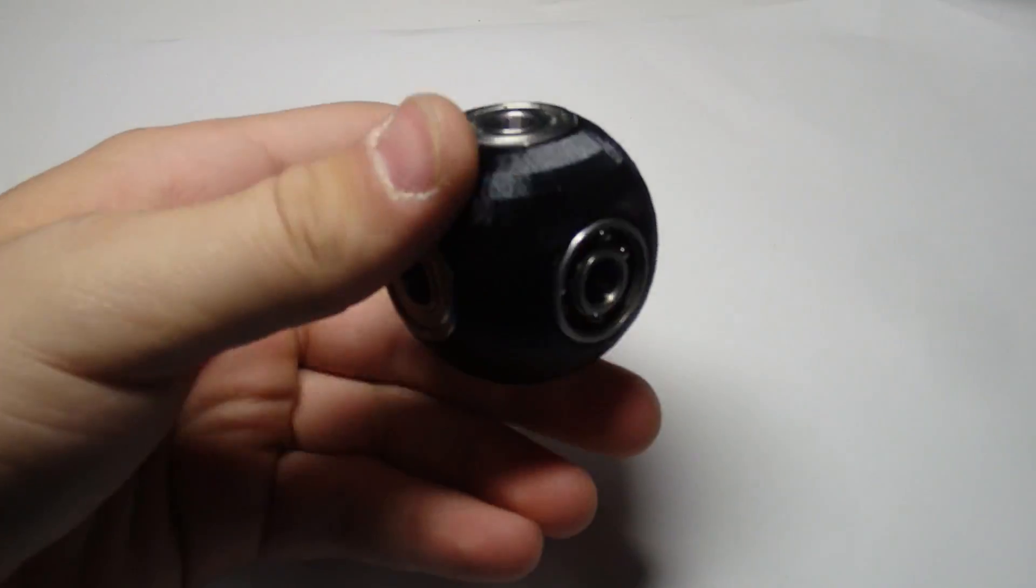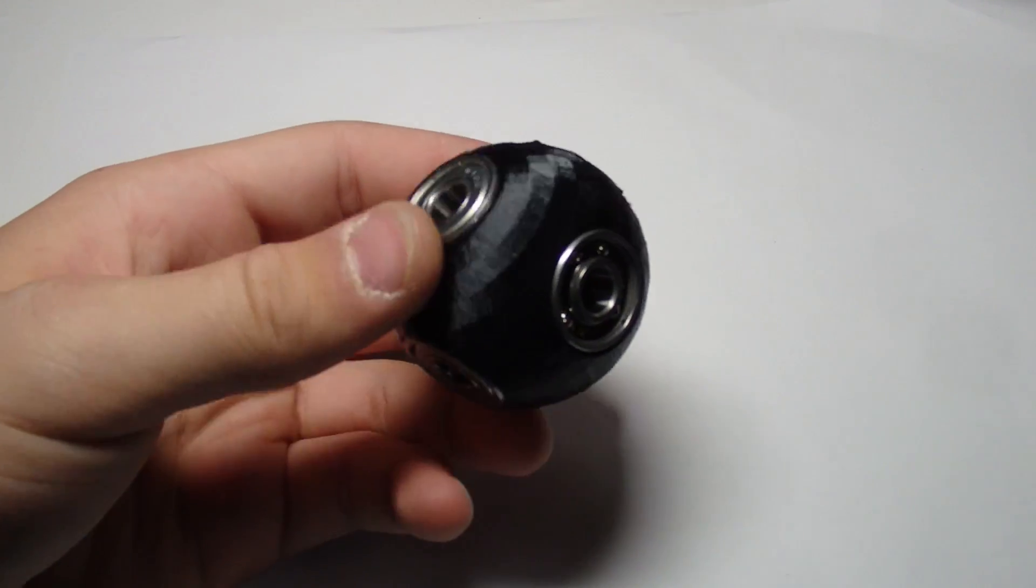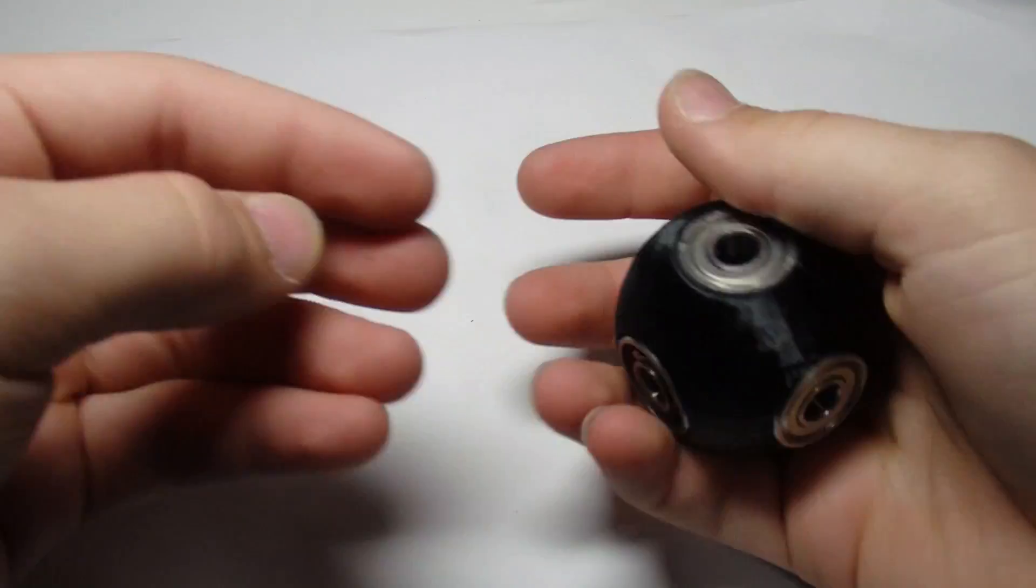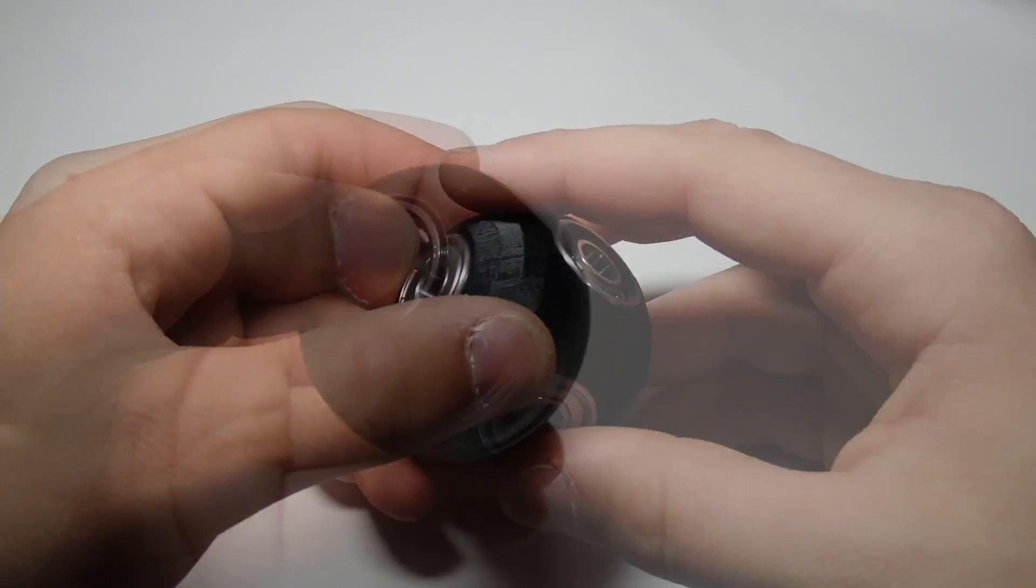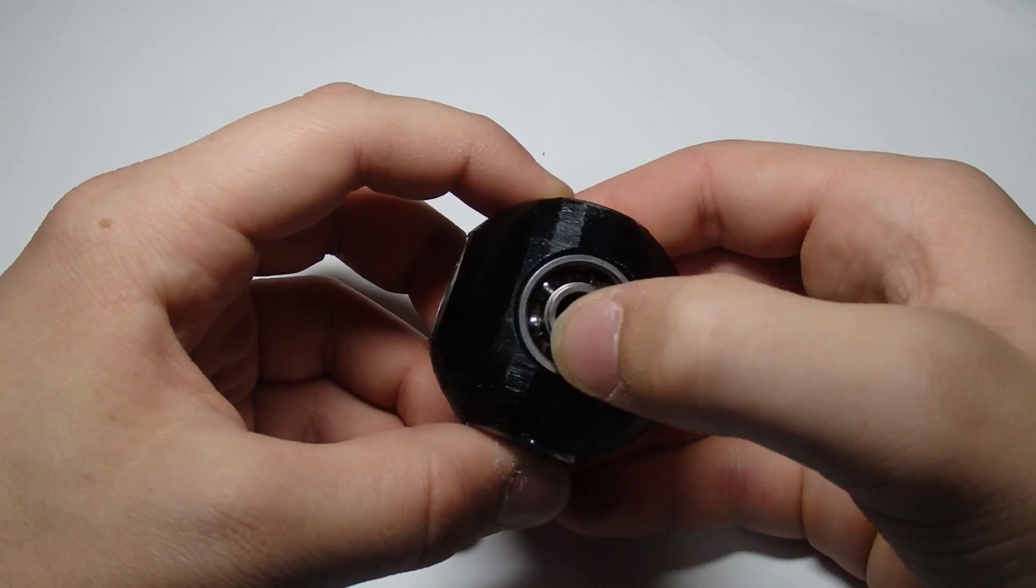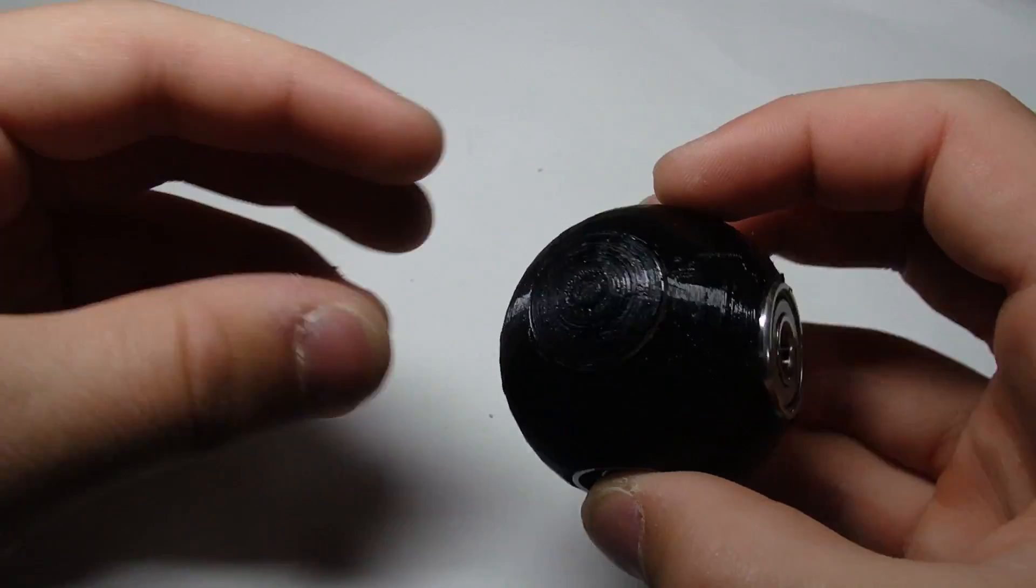This next one is pretty cool. I call it the sphere fidget spinner and it's just basically a ball that you can do whatever you can with a normal ball. You can roll it around, toss it in the air, and then you can also use it as a simple fidget spinner. It features six bearings all around it.